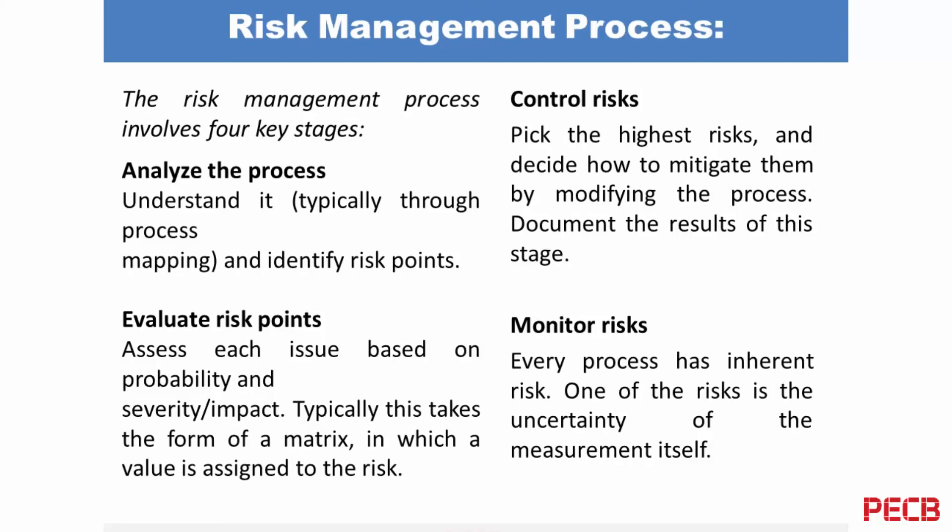At each stage of sampling, there are risks involved: the risk of using wrong equipment, of sending an untrained field sampler, or of improper preservation. For example, a sample preserved at 20°C in the field transferred to a cold room at 4°C in the laboratory — but if no arrangement for preservation is made and it's four days later, the integrity of your sample is compromised. Understanding the process and evaluating the risk points typically takes the form of a matrix in which a value is assigned to each risk, and the results must be documented. Uncertainty of measurement itself is a risk.